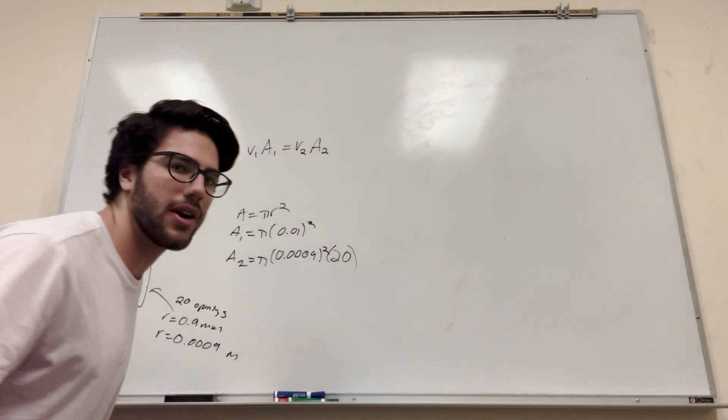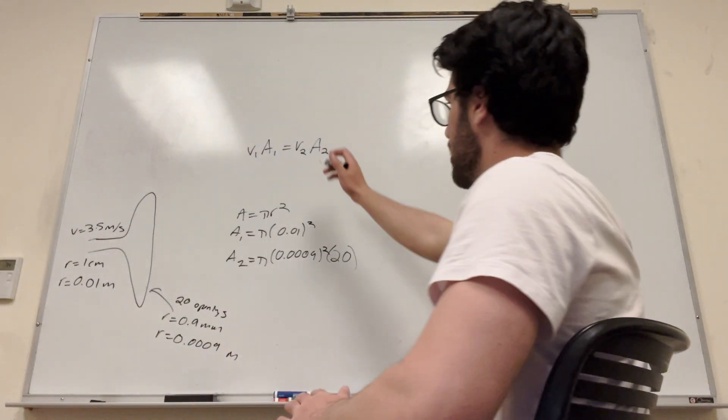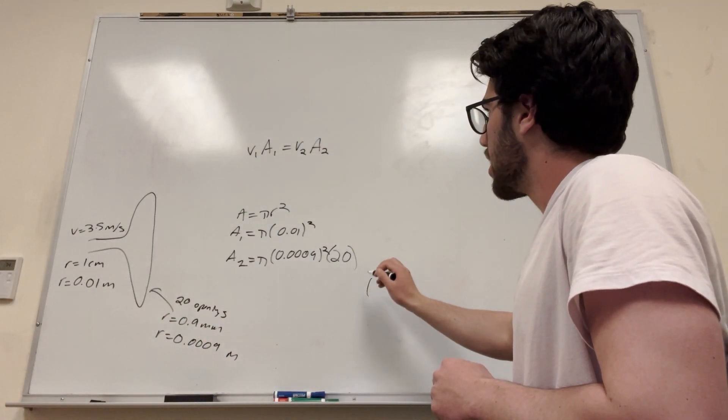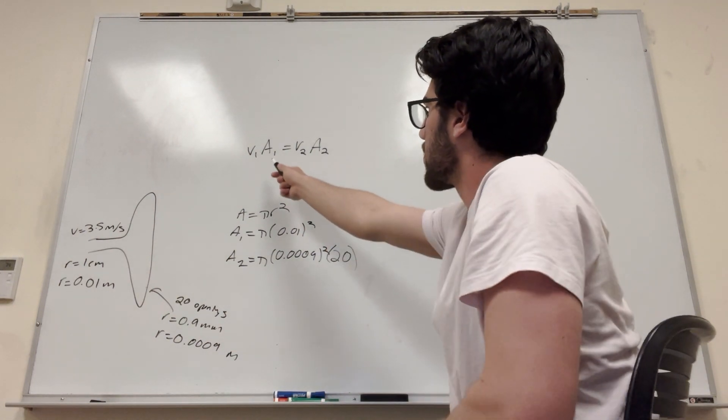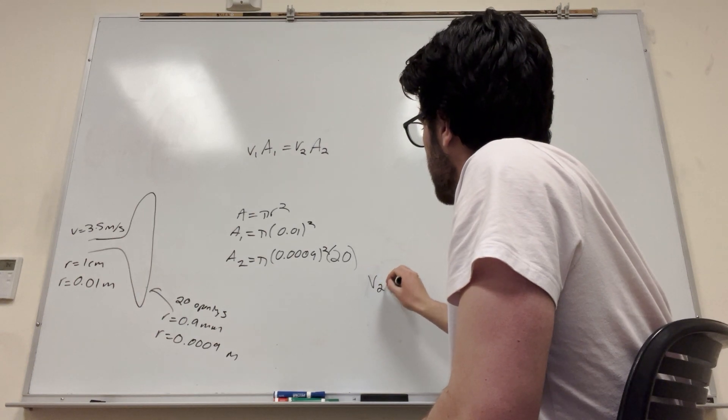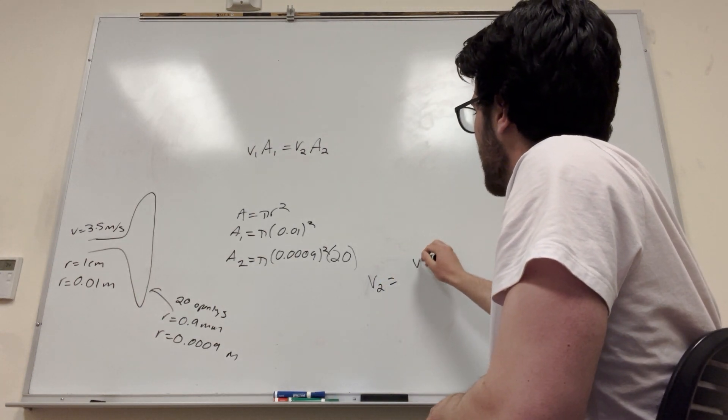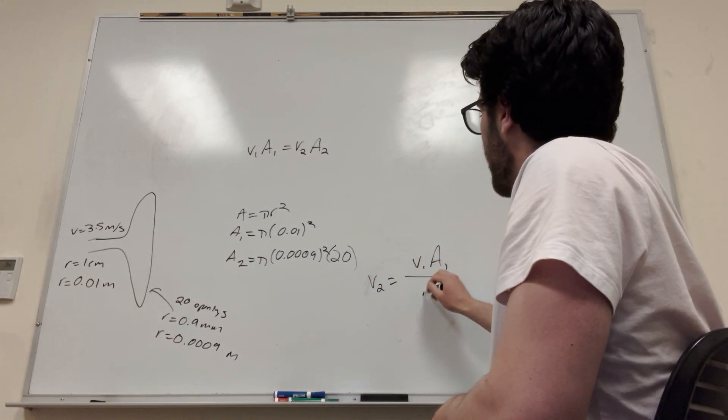Okay, so we have everything we know. Let's go ahead and plug it into our equation. So we're trying to find velocity 2. So we can go ahead and rearrange it first. Just divide that area 2 over to the other side. And you're going to get velocity 2 is equal to velocity 1, area 1, over area 2.